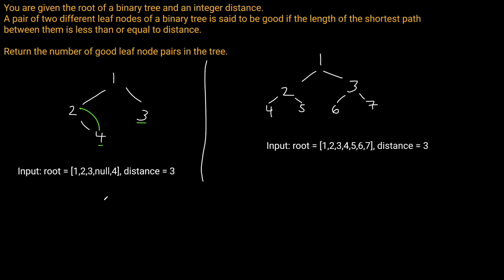But what about a more complex example? What about this tree, where again we have the distance of 3, but this is our tree structure now. We can see that the leaves are 4, 5, 6, and 7, but what is the number of good leaf node pairs?